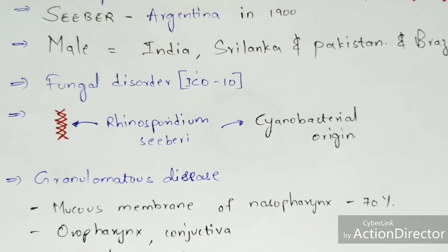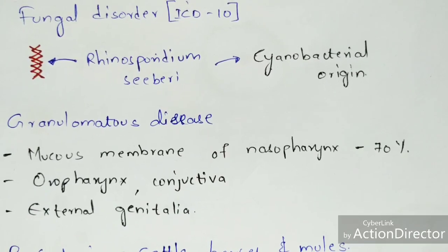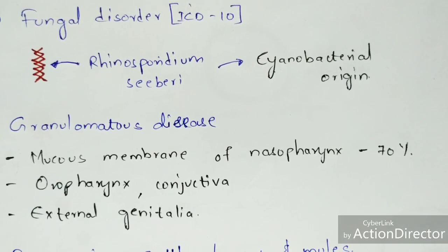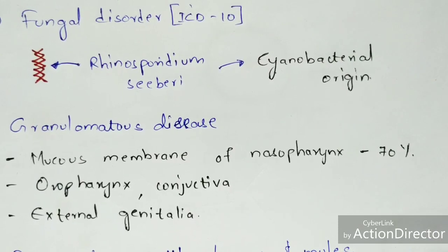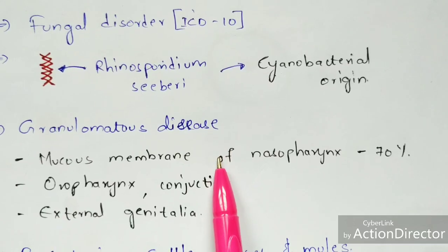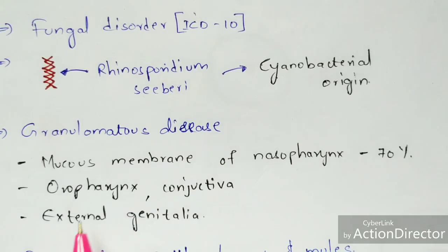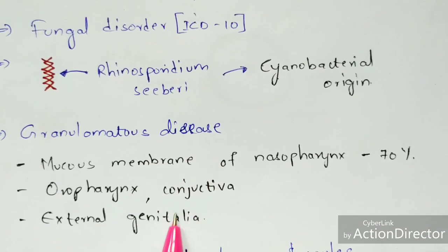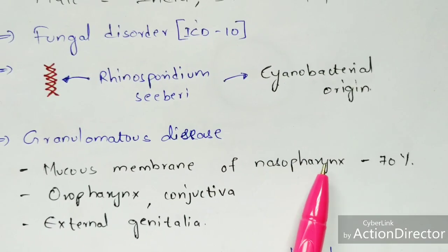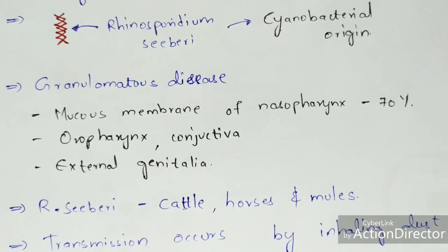Rhinosporidiasis is considered a granulomatous disease. It is also called a chronic disease because once a person is affected, it may last for a long period of time. It affects the mucous membrane of the nasopharynx, oropharynx, conjunctiva, and external genitalia — with 70% of cases affecting the nasopharynx region.